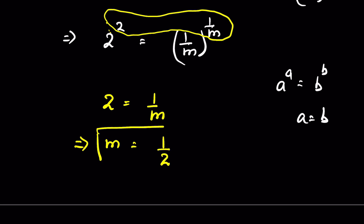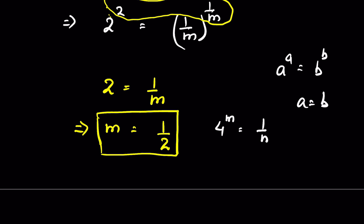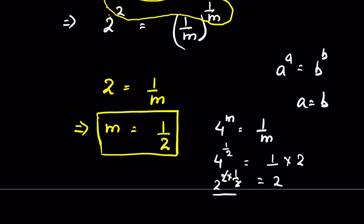That is our solution. Let's verify: substituting m = 1/2 into 4 raised to the power m gives 4 raised to the power 1/2. On the right side, 1 upon m becomes 1 divided by 1/2, which equals 2. Since 4 is 2 raised to the power 2, we get 2 raised to the power 2 times 1/2, and the 2s cancel, giving 2 equals 2. LHS equals RHS — our answer is verified.